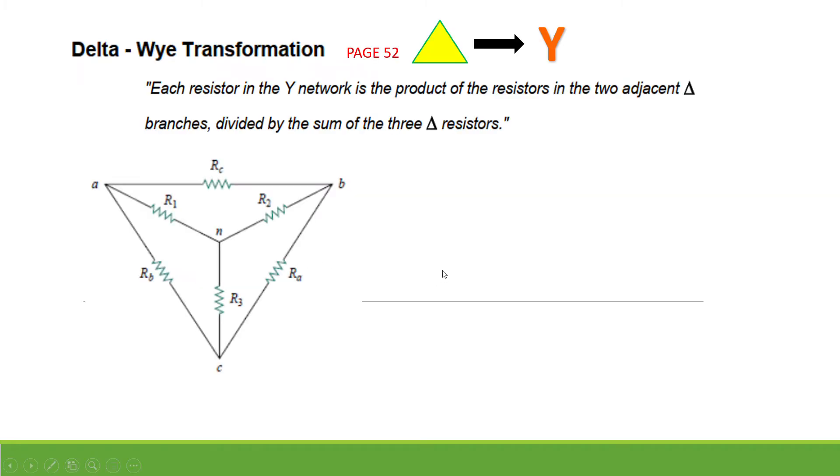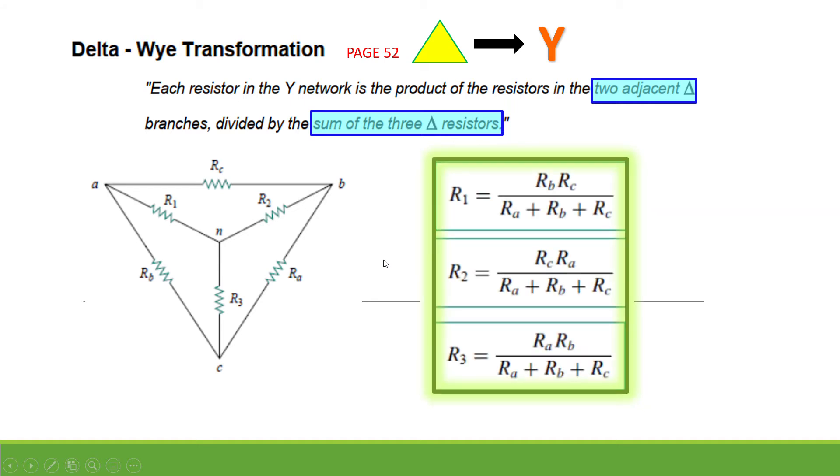We're going to discuss first the Delta-Y transformation from Delta circuit or Delta network to Y network. Each resistor in the Y network is the product of the resistor in the two adjacent Delta branches divided by the sum of the three resistors. To convert Delta network into Y network, we're going to use this equation.